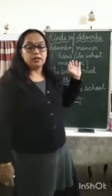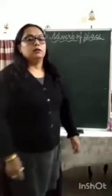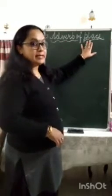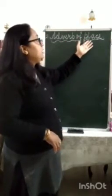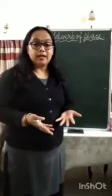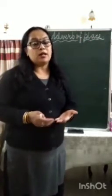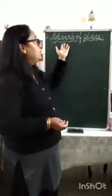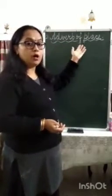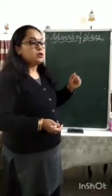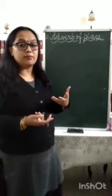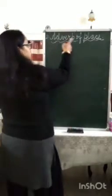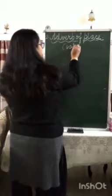More adverbs of manner include: carefully, carelessly, suspiciously — for example, 'the boy looked around suspiciously' — and beautifully, as in 'she danced beautifully'. The second type of adverb is adverb of place. Words which tell you where an action takes place, has taken place, or will take place come under adverb of place. To identify them, ask the question 'where'.